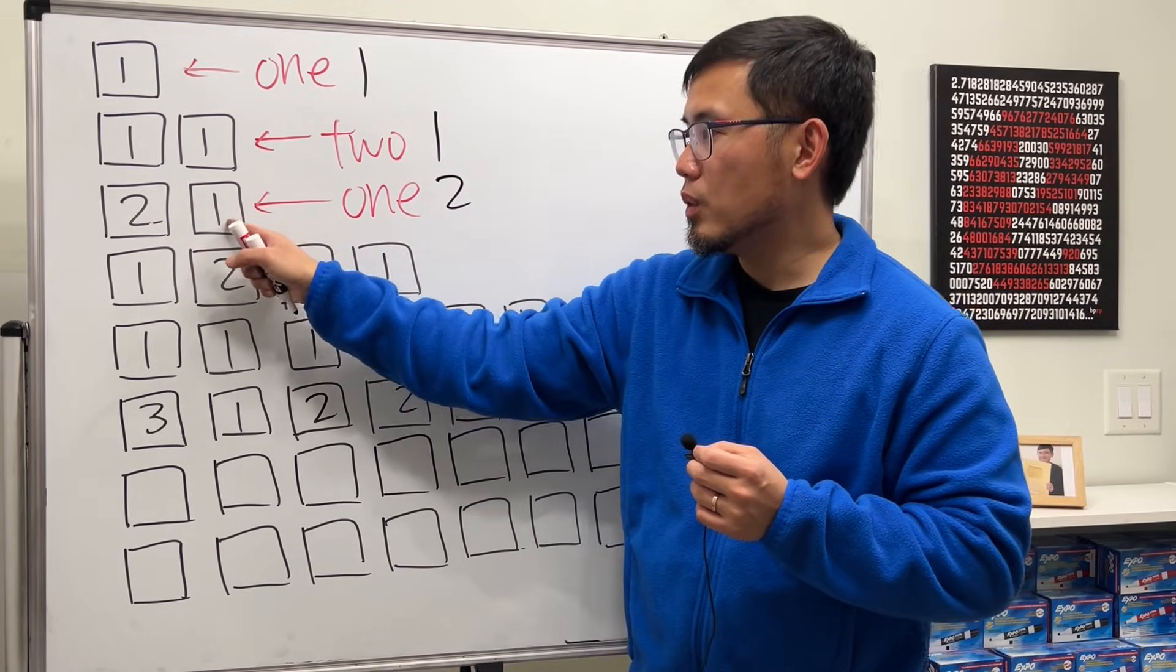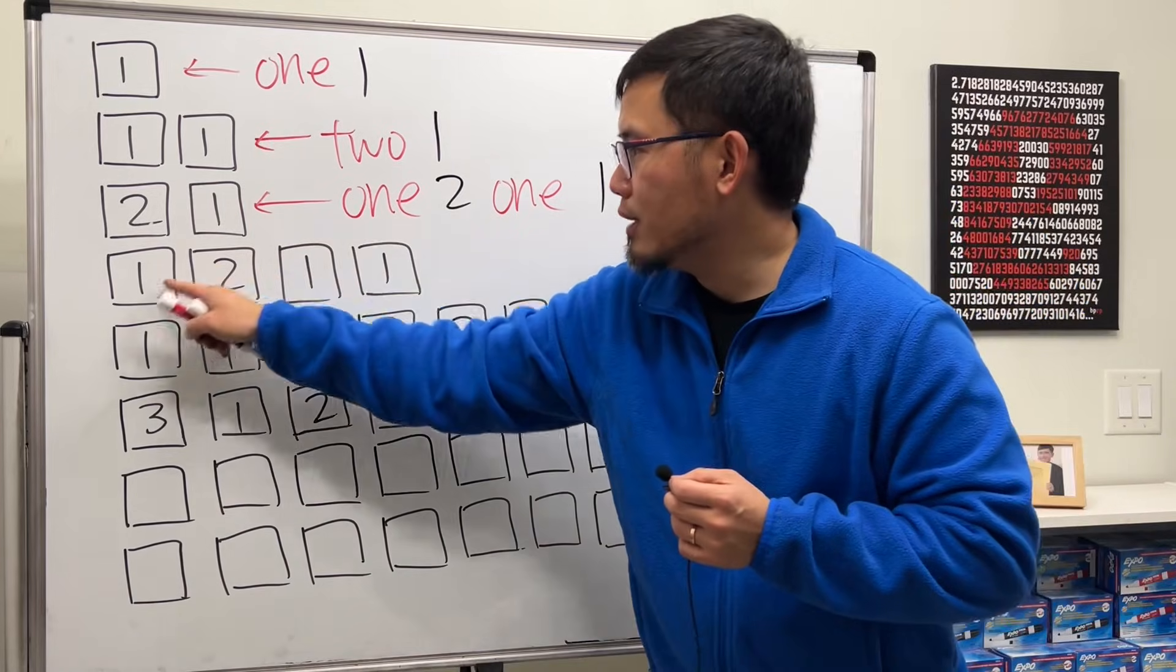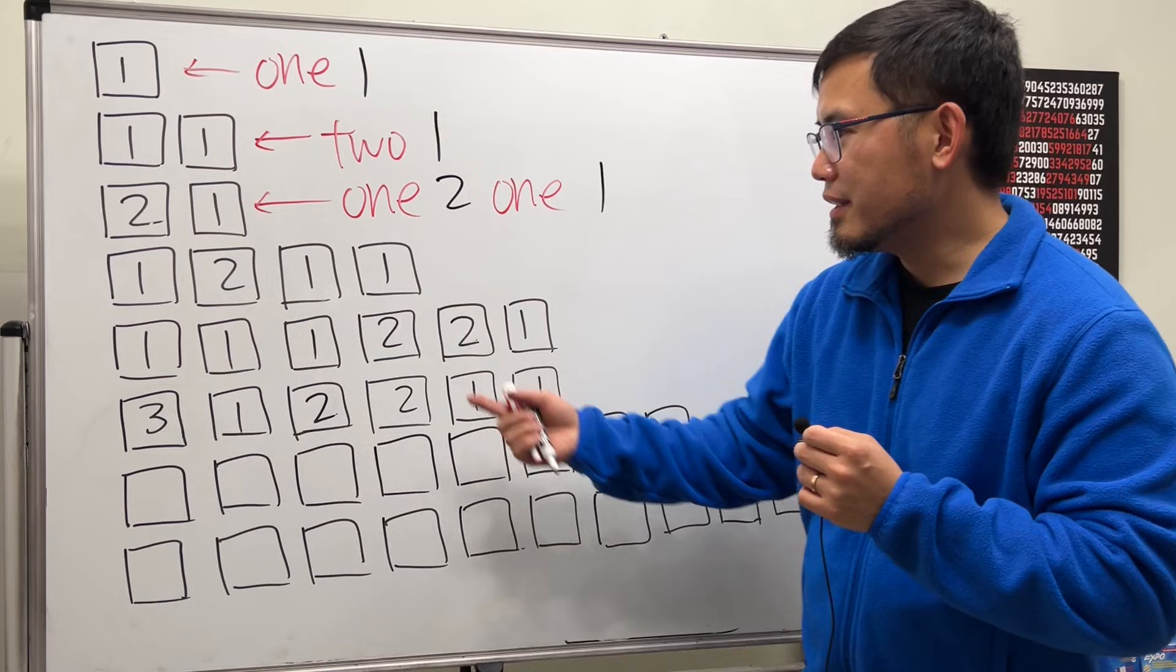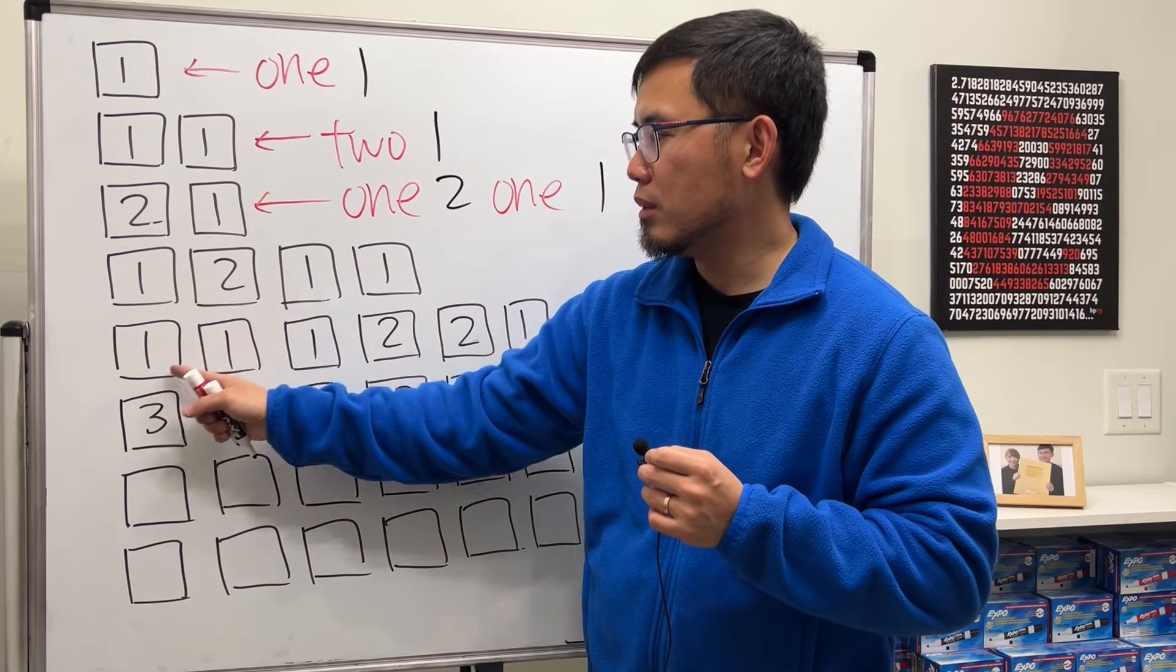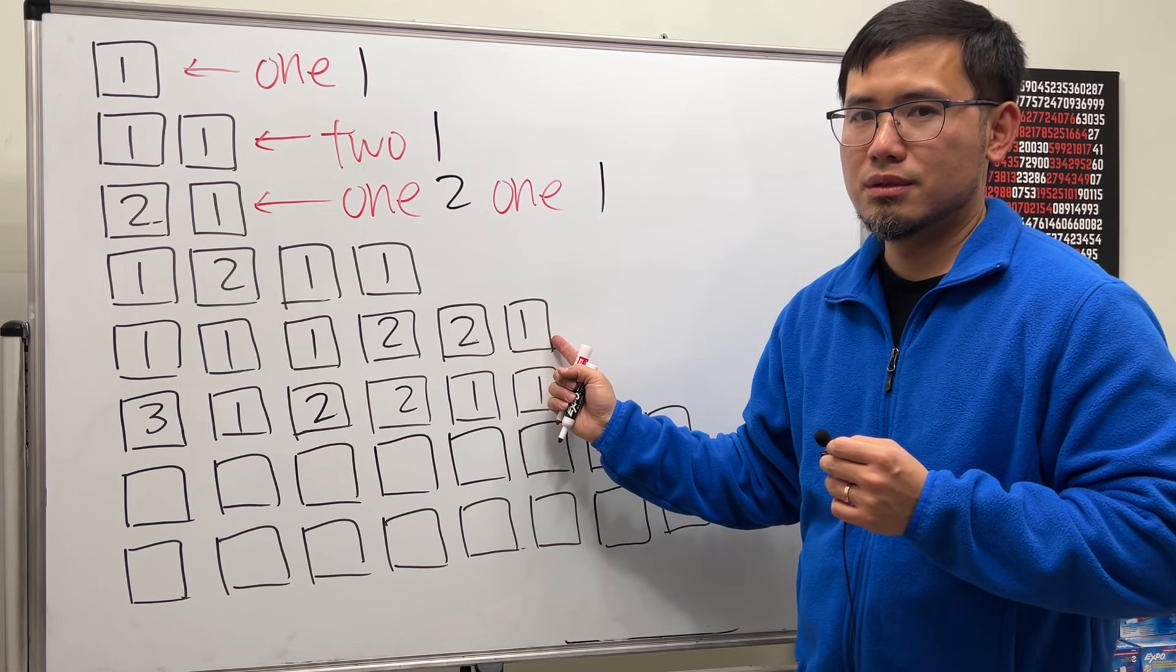Next one, what we have? We have one two and then what we have? One two right here. One of the twos right here, and then one one, one two, one one.